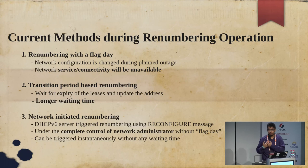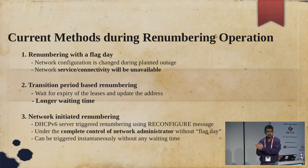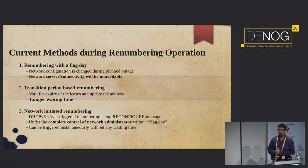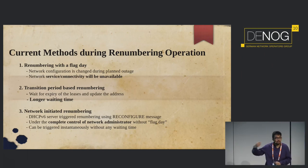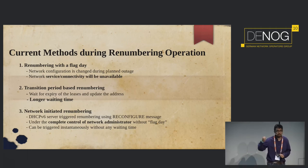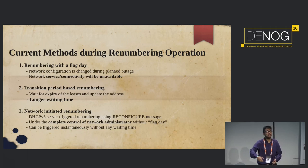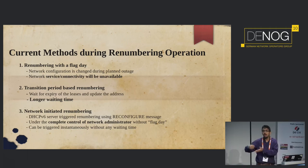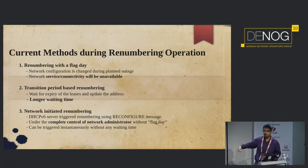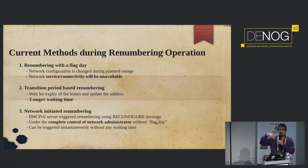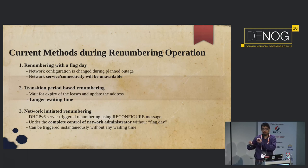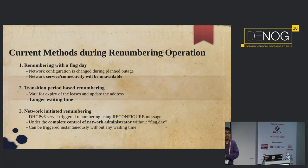The third method, which was the part of the project I did with KIA, is network-initiated renumbering. This is a mechanism in which the DHCPv6 server triggers reconfiguration — a server-initiated message exchange where clients are forced to send a renew or rebind message and the server can change IP addresses dynamically. It addresses the disadvantages of both prior methods: there is no flag date defined, so no downtime, there is smooth transition, and it is instantaneous — the operator doesn't have to wait for each client to send a message.